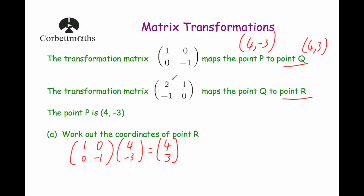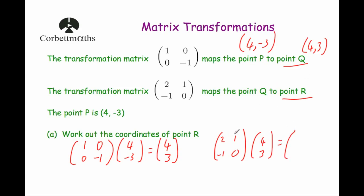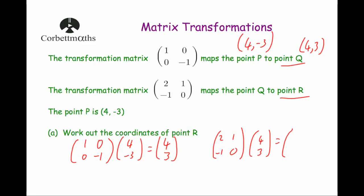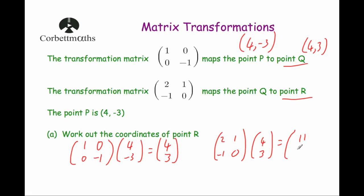Now we multiply Q by the second transformation matrix 2, 1, minus 1, 0. The first row times the column: 2 times 4 is 8, plus 1 times 3 is 3, giving 11. The second row times the column: minus 1 times 4 is minus 4, plus 0 times 3 is 0, giving minus 4. So point R is (11, −4).